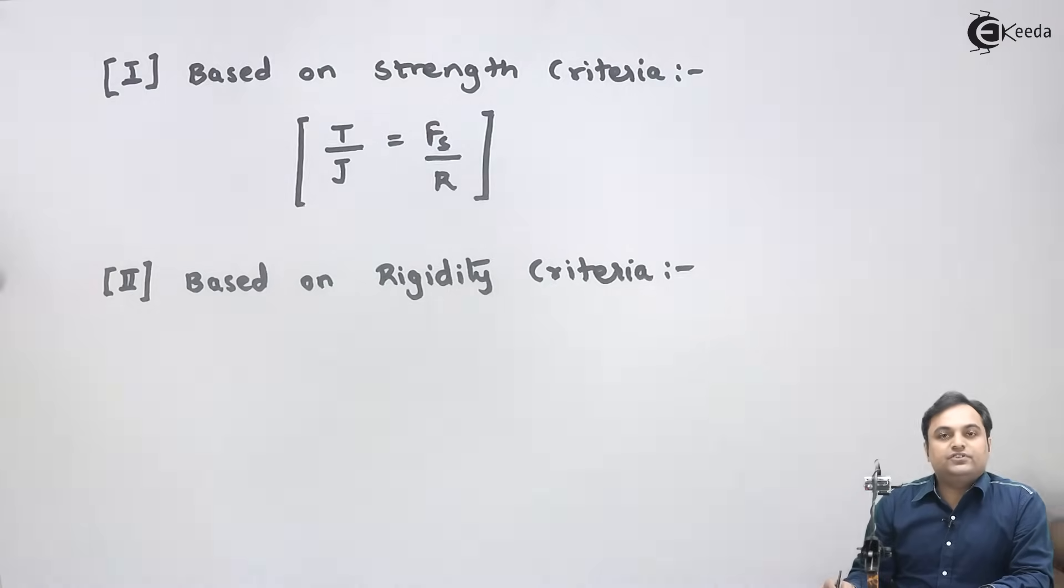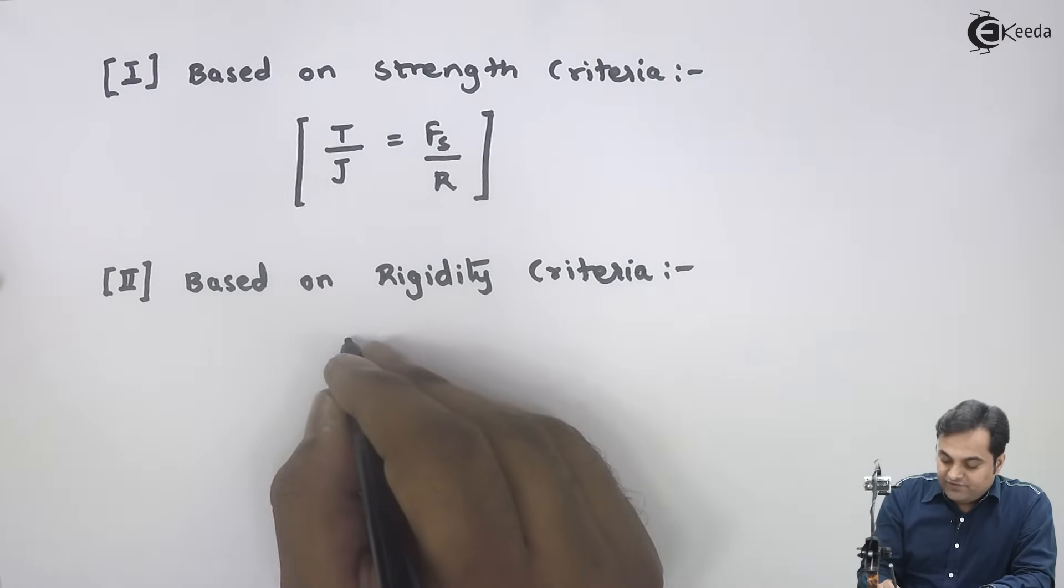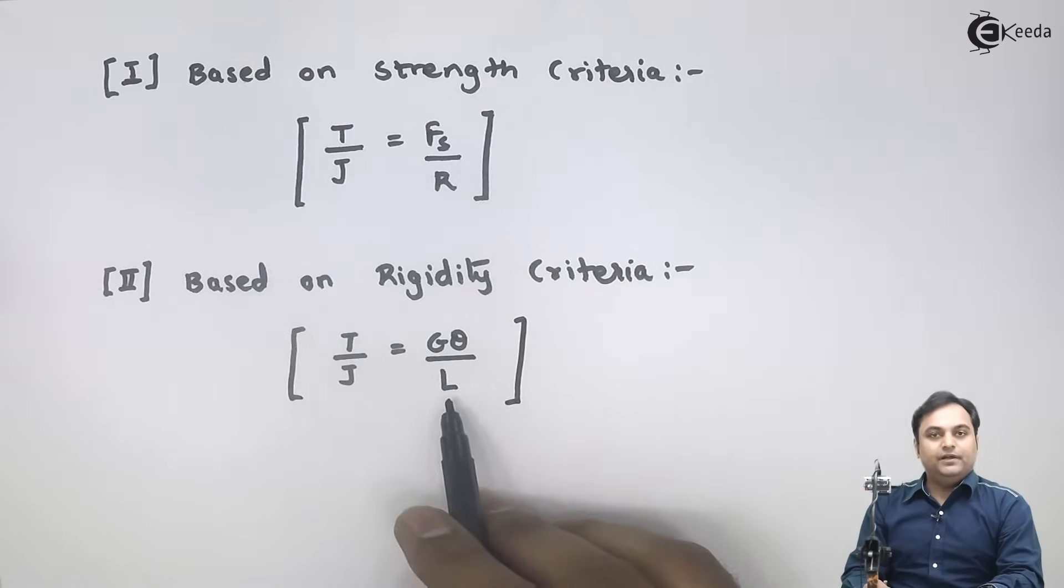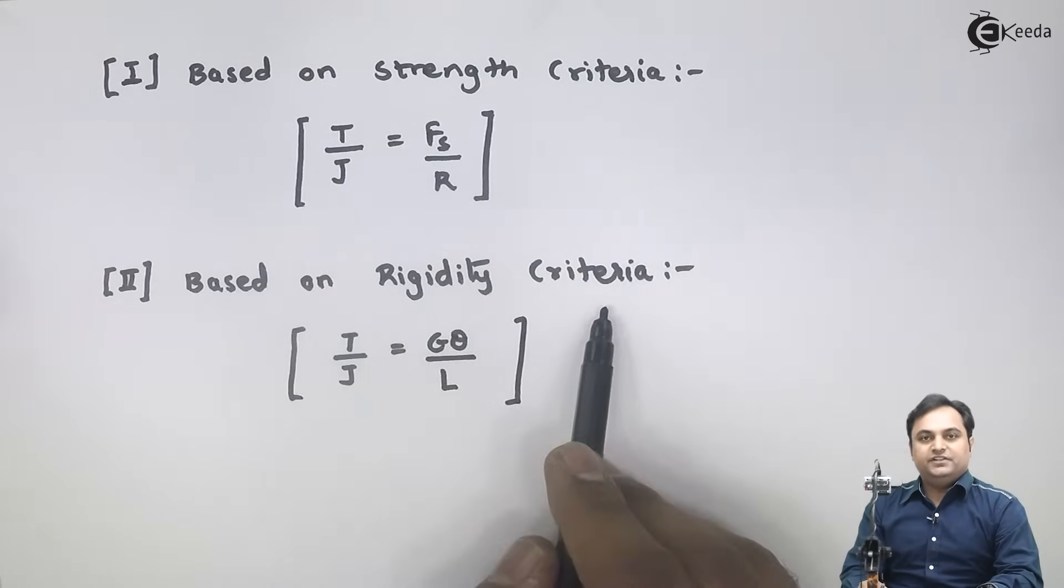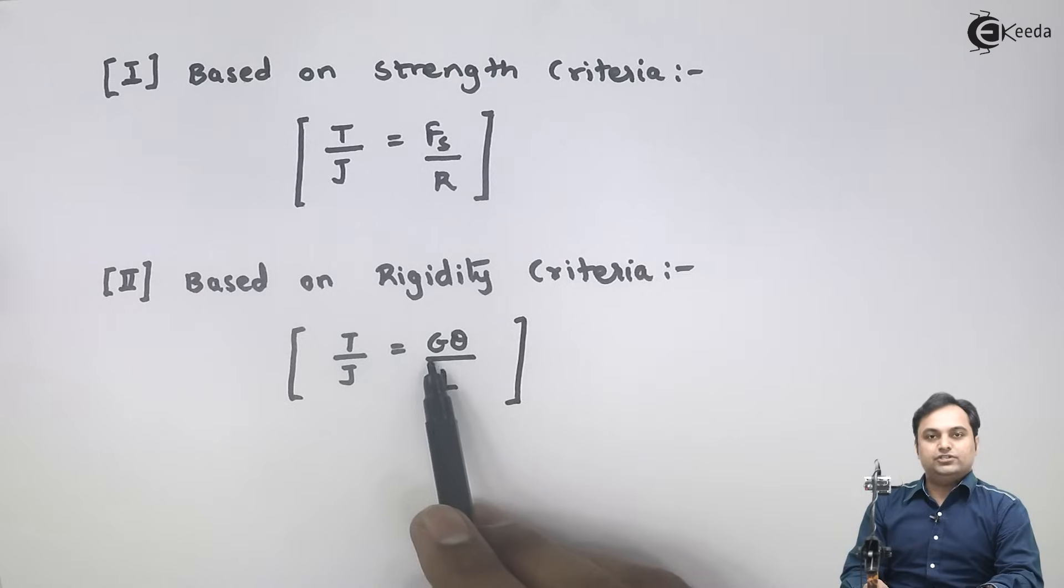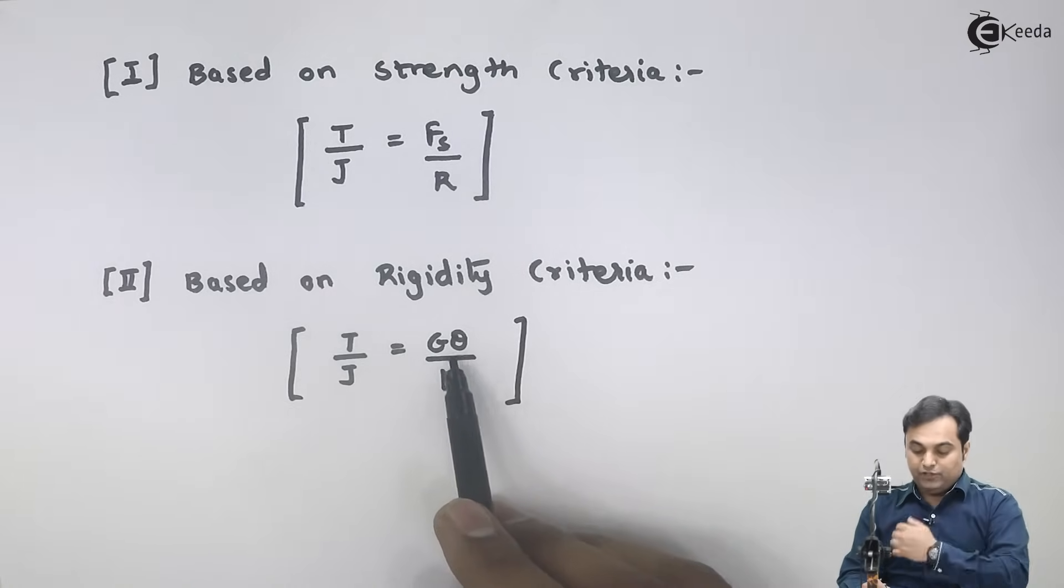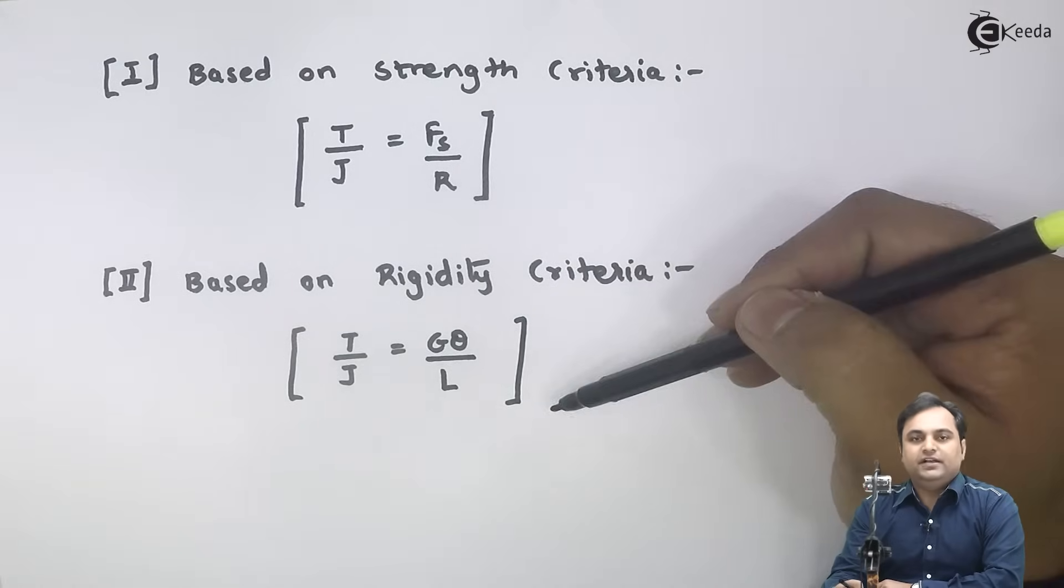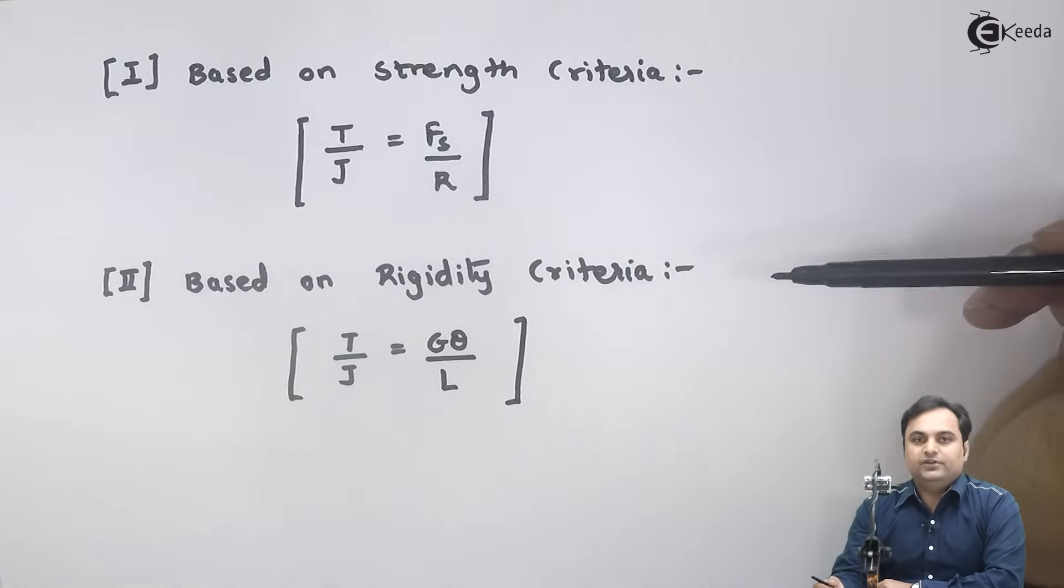Next, based on rigidity criteria, I have the formula T/J = Gθ/L. This is called as rigidity criteria because here I have modulus of rigidity G and angle of twist theta. So based on these two criteria, we can solve any problem related to shafts.